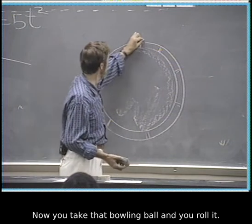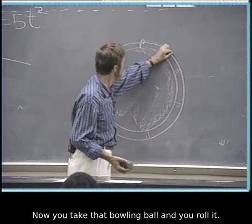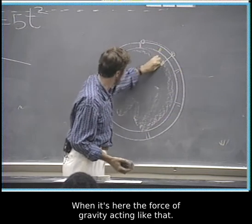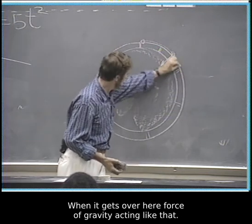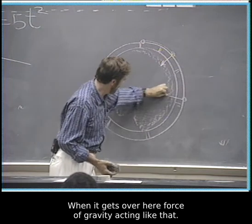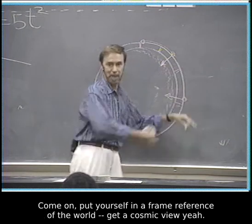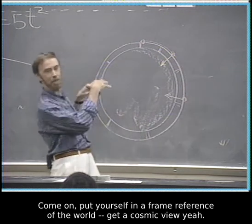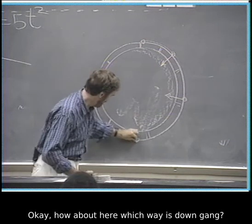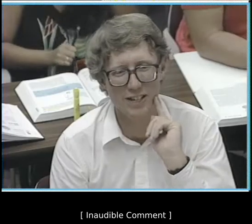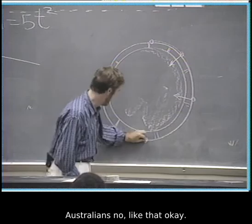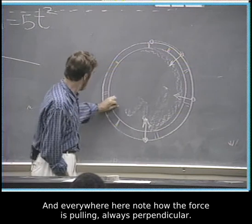Now you take that bowling ball and you roll it. When it's here, the force of gravity is acting like that. When it gets over here, the force of gravity is acting like that. Is that down? Some people think down is always this way. Put yourself in a frame of reference - get a cosmic view. How about here? Which way is down? Australians know - like that. And everywhere...